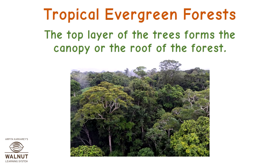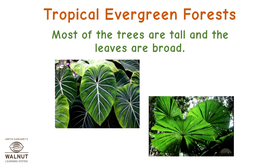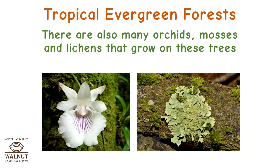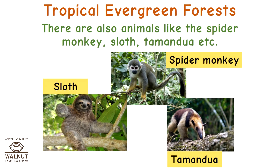The top layer of the trees forms the canopy or the roof of the forest. Most of the trees are tall and the leaves are broad. There are also many orchids, mosses, and lichens that grow on these trees. Many birds live here like the hornbill, sunbird, toucans, and macaws. There are also animals like the spider monkey, sloth, and tamandua.